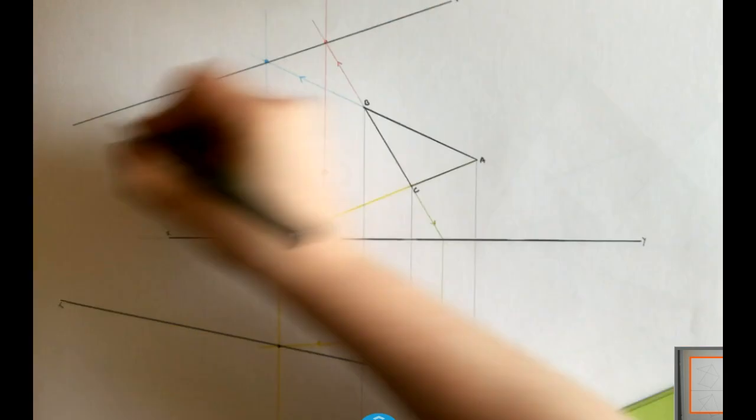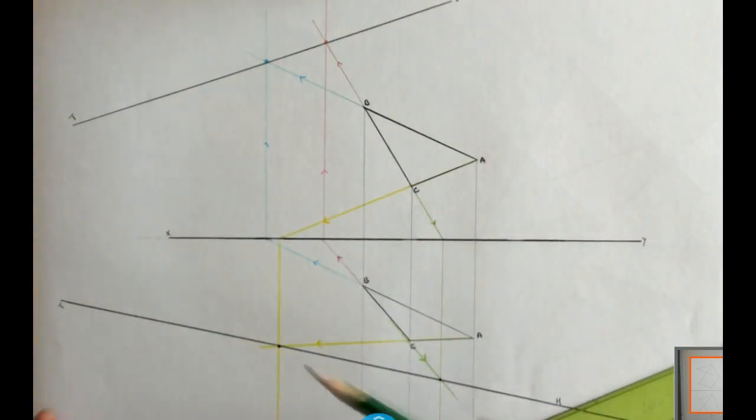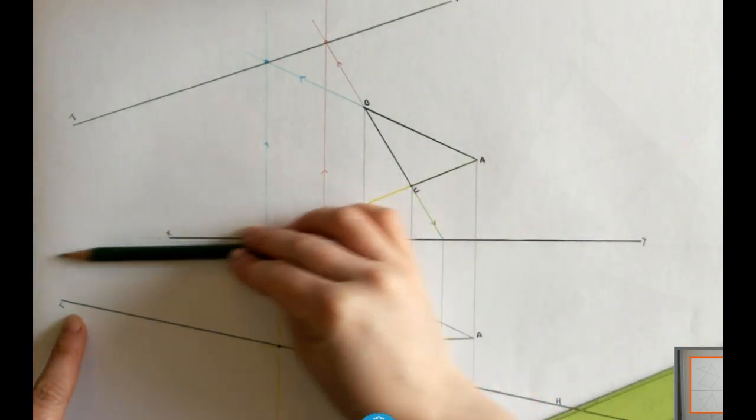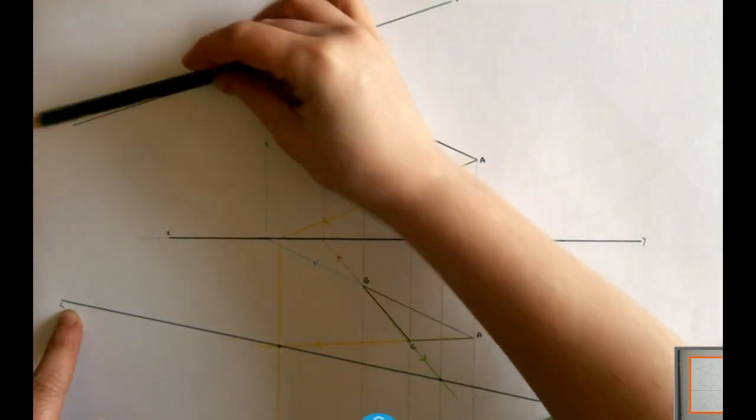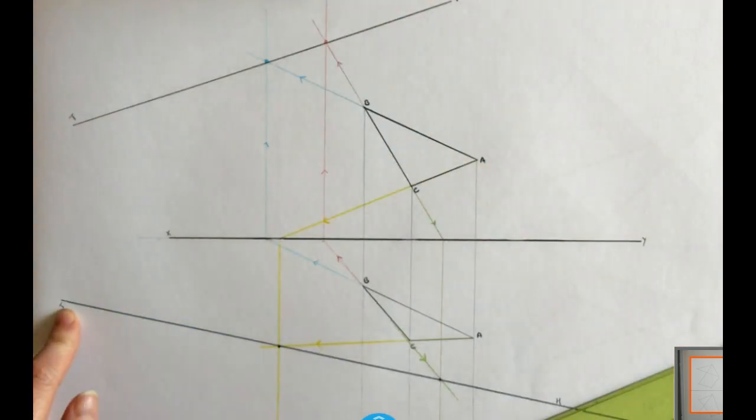That's giving me my vertical trace. As you can hopefully visualize, if I was to extend on the XY line, the horizontal trace and the vertical trace, they will all meet at one common point. And that's how we get the traces of a plane.